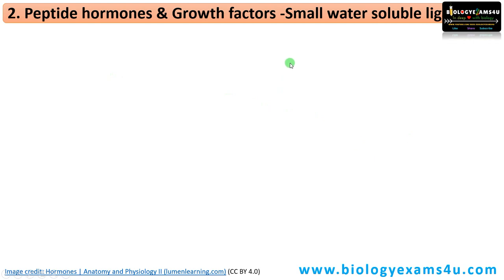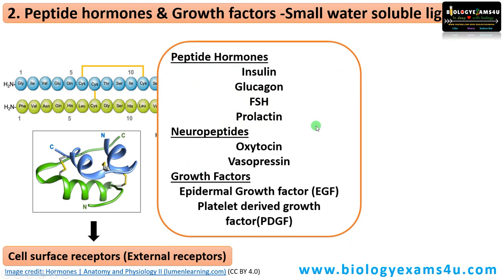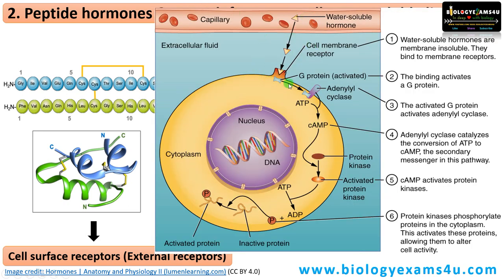The second type is peptide hormones and growth factors. They are small water-soluble ligands. The classical example is insulin hormone, which is made up of 51 amino acids, and has a receptor on the cell surface or external receptor. Other examples include glucagon, FSH, prolactin, neuropeptides like oxytocin and vasopressin, and growth factors like epidermal growth factor and platelet-derived growth factor. These hormones are released in the bloodstream and on the target cell are received by receptors present on the plasma membrane, such as a G protein-coupled receptor, which activates many chemicals inside ultimately leading to gene expression and a cellular response.